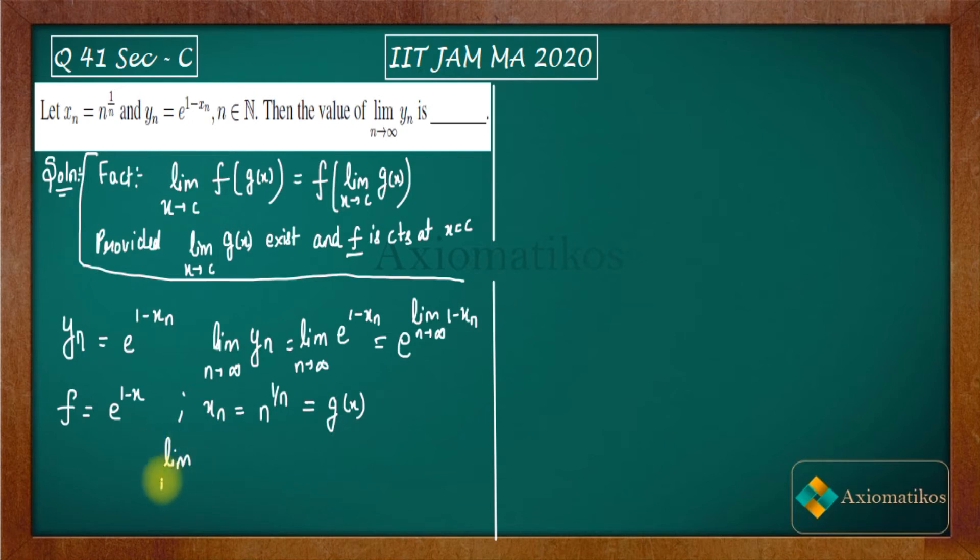So limit N goes to infinity N to the power 1 by N. Let us evaluate it. So consider this thing equal to G. And now apply log on both sides. What will happen is you will get log G is equal to 1 by N log of N. Now see this thing that if you will place infinity, then you will get log infinity by infinity. That means log infinity is infinity. So you are getting infinity by infinity form.